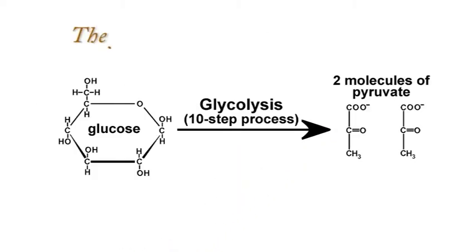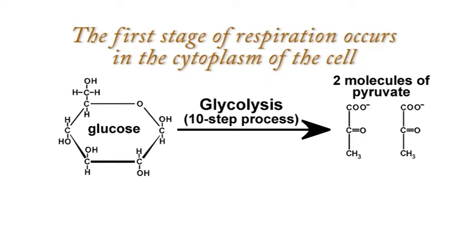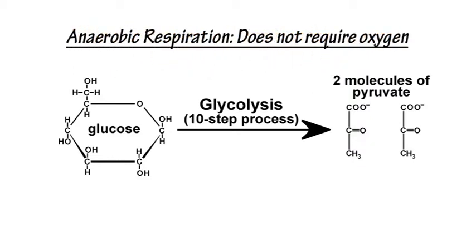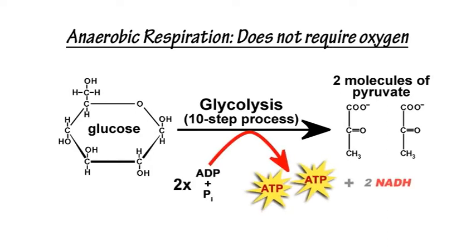The first stage of cellular respiration, known as glycolysis, occurs in the cytoplasm of the cell and involves the breakdown of glucose into pyruvate. This process does not require oxygen and so it is also known as anaerobic respiration. However, it only results in the net production of two molecules of ATP.